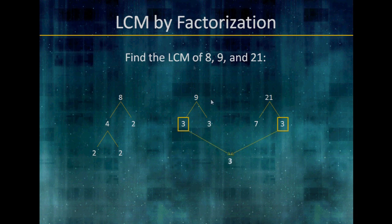When we're finding the LCM, we want to look for common primes. So 9 and 21 have a common prime of 3, so we can cancel out one of them. Once we cancel all we can, then we multiply all the primes out: 2 times 2 times 2 times 3 times 3 times 7. We only have two 3s because we canceled one. So the LCM of 8, 9, and 21 is 504.